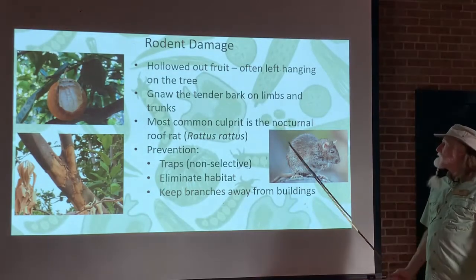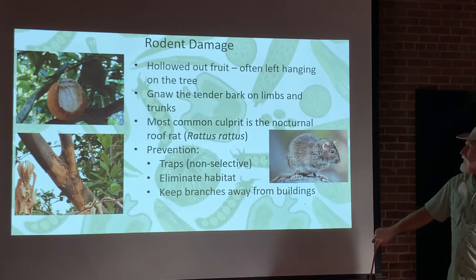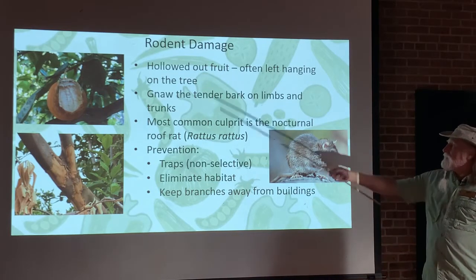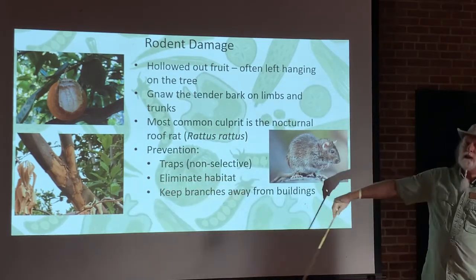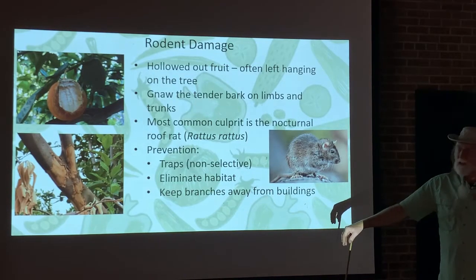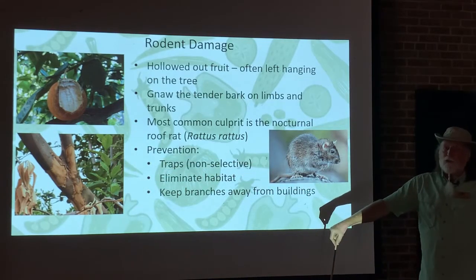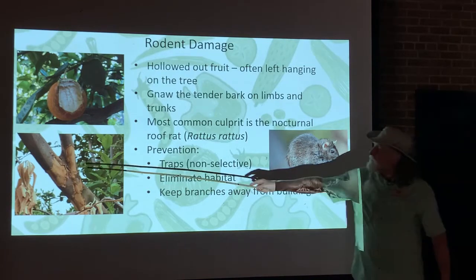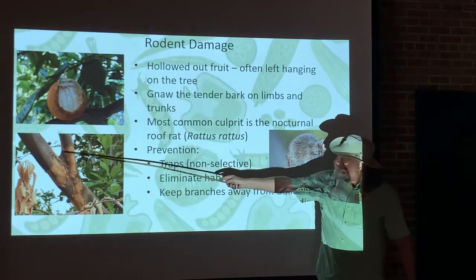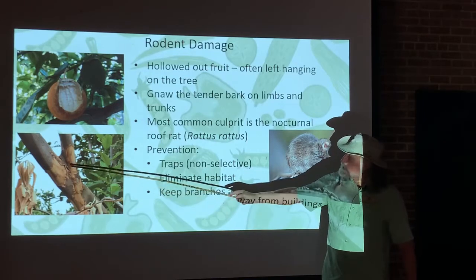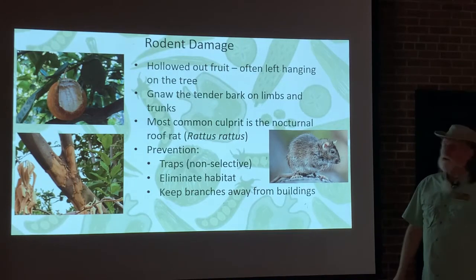The most common culprit is the roof rat. A lot of people say they don't have any rats around their house, but you'd be surprised — these guys are nocturnal, so you're not going to see them during the day. They stay hidden and come out at night to feed on your citrus. They will also chew on the bark sometimes, especially during drought when they're looking for moisture, or to work on their teeth. They can actually cause severe bark damage, as you're seeing here with bark chewed away in large patches on these limbs.